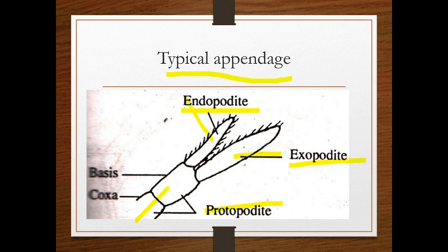The protopodate consists of two parts. The first one is the coxa, and above it is the basis. This is the structure of a typical appendage, and there are variations of this basic pattern.